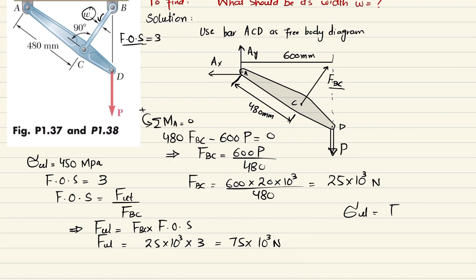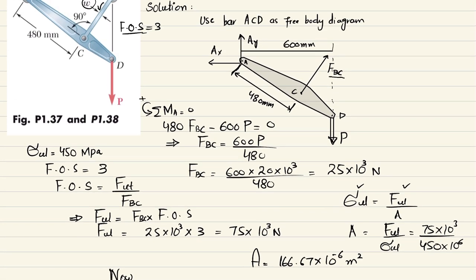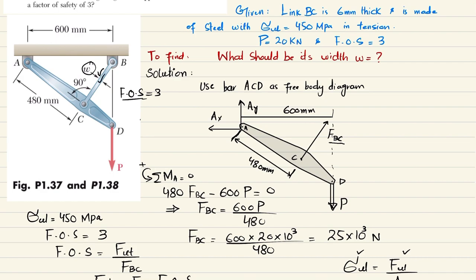We know that ultimate strength equals stress = F_ultimate divided by area. We have F_ultimate but not area, so: A = F_ultimate / σ_ultimate = (75×10³) / (450×10⁶). When you calculate this, the area comes out to be 166.67×10⁻⁶ square meters.